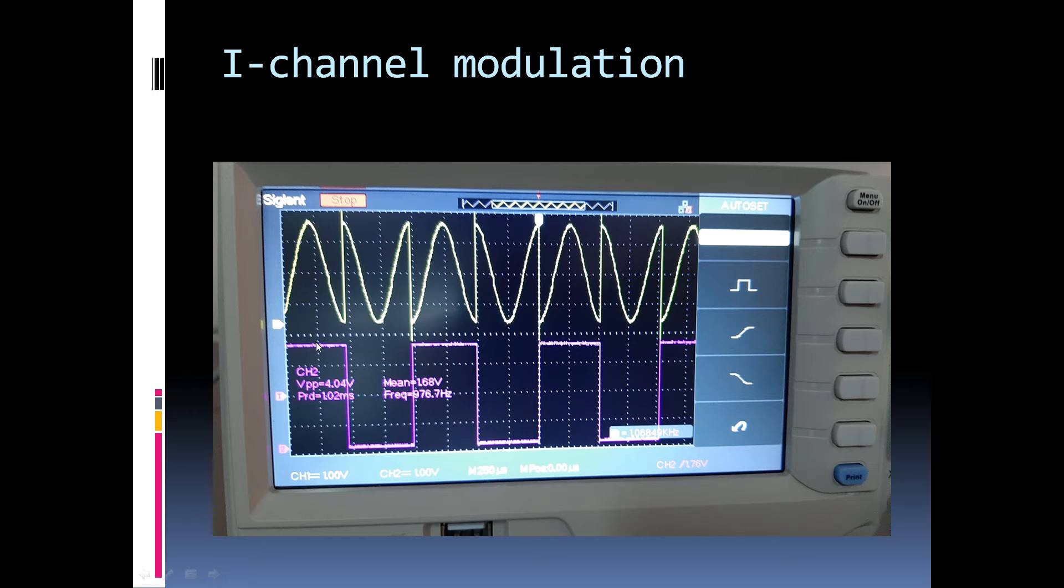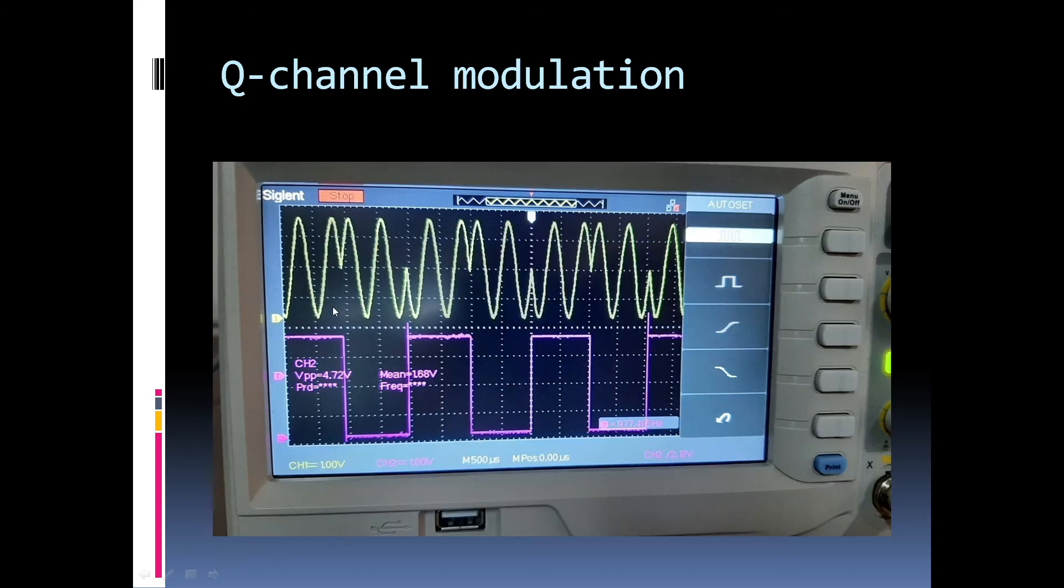If we look at the modulated signal, then I channel modulated signal will look something like this. And we can see that there is a 180 degree phase change wherever there is a transition in the level that is when we are going from 0 to 1 or 1 to 0. So, now we can see the Q channel modulation in this case. And here, the phase changes are 0 and 180 degree when the carrier, in the carrier, when the data changes between 0 and 1. Hence, I and Q channel are basically two BPSK signals.